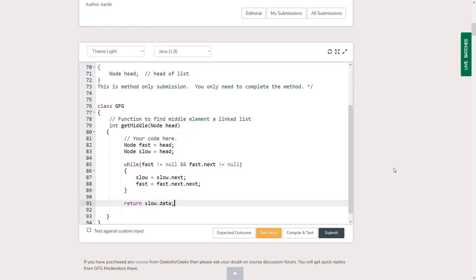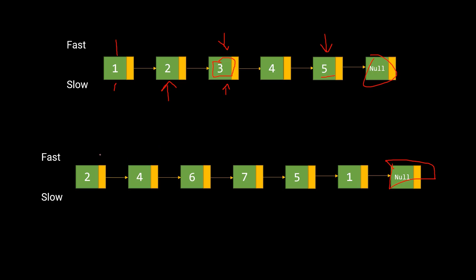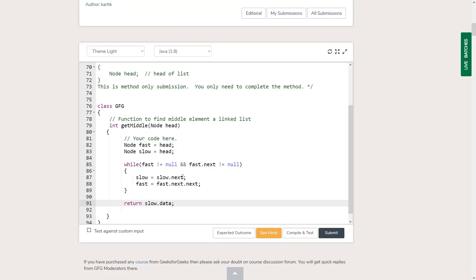For the even-length list, fast and slow both start at head. Fast and slow advance: slow moves to 2, fast moves to 3; then slow moves to 4, fast moves to 5 (after checking six and seven are not null); then slow moves to 6 and fast moves to null. Now fast is null so we exit the loop, and we return slow.data which is seven — correct for the even case.